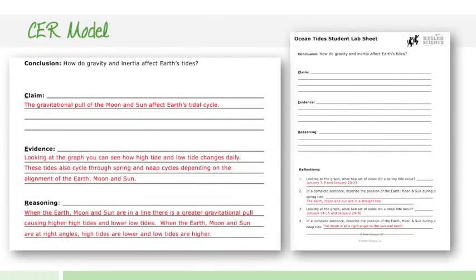At the end, the CER model is going to be included — this is their claim, evidence, and reasoning statement. I'm not going to get into exactly what that is because you're likely already doing this in your class. If not, this is something very easy to implement, and I've provided links within each lab on how you can implement it in your class, including a link to a great video that explains what the CER model is and how it benefits students. This would be the student lab sheet — the answer document at the back of the lab that you would likely use to grade, or at least a portion of your grade would come from this area.